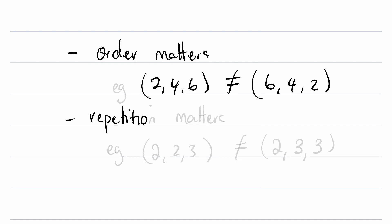Repetition matters. For example, the list (2, 2, 3) is not the same as the list (2, 3, 3), even though they have the same elements. In the first, there are two 2s and in the second, there are two 3s.